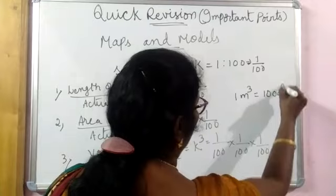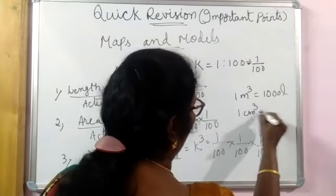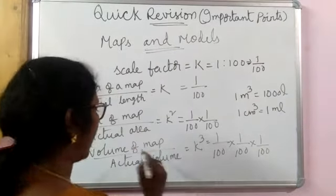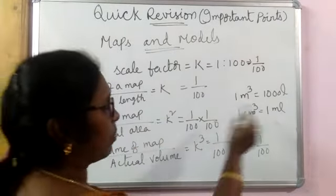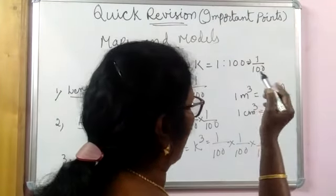K cube. And you remember, 1 meter cube equal to 1000 liters. Okay? 1 cm cube equal to 1 milliliter. Sometimes when you find the volumes, sometimes they ask this - remember. 1 cm cube equal to 1 ml, you remember.